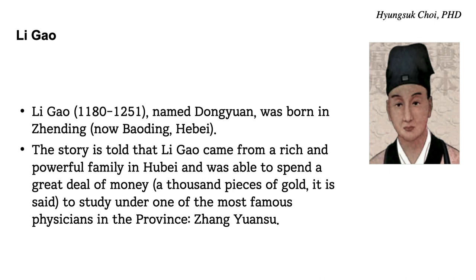Bujong Ichi Tang was made by Li Gao, an ancient doctor from about a thousand years ago in the Yuan dynasty during the Mongolian conquest. He was very weak with a poor constitution and troubled by many diseases, especially gastrointestinal disease. His parents were very rich, so they sent him to Zhang Yuanso, the most famous doctor at the time, who treated his problems. Li Gao learned medicine from him and became an even more famous doctor in the Yuan dynasty — one of the most famous throughout Chinese medical history. This Bujong Ichi Tang was invented by Li Gao.